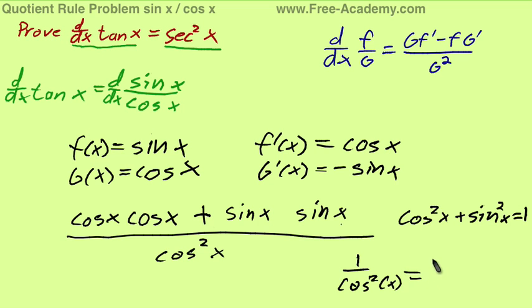Which can be written as 1 over cosine of x, all of that squared, which is the same as secant squared of x. So there you have it, the proof that the derivative of tangent of x equals secant squared x.